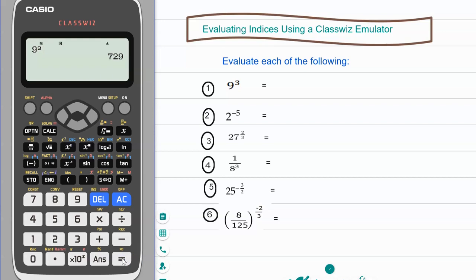Click on equals and your answer is 729, so I'm just writing that down on the BitPaper. I'm going to clear the screen and go for number two.